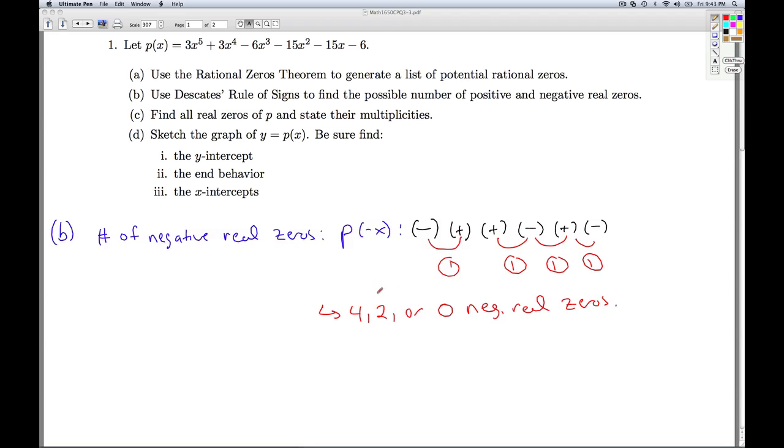Now, it doesn't mean any of these have to be among the rational zeros. They could be irrational zeros.